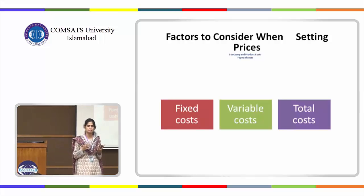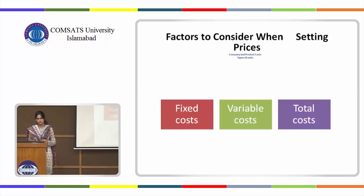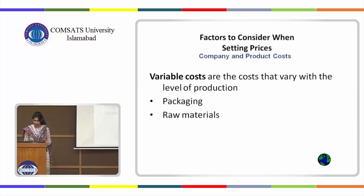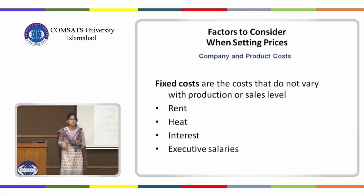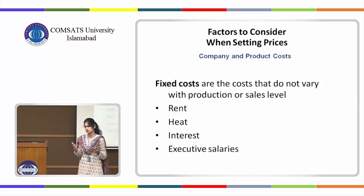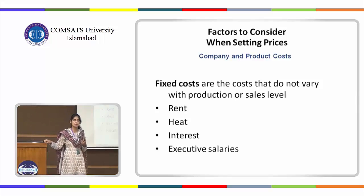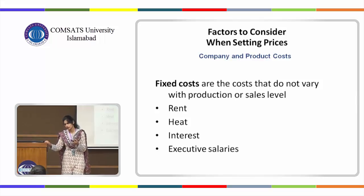When doing cost-based pricing, one of the most important factors to consider is economies of scale. The total cost equals fixed cost plus variable cost. Fixed cost is a cost that does not change with the number of units you produce — executive salaries, rent, heating, cooling, and interest payments remain whether you produce 10 or 10,000 units.